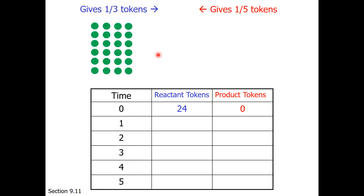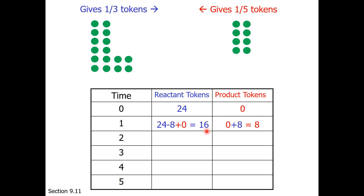We start with 24 reactant and no product tokens. Our first exchange: one third times 24 is 8 going forward, and one fifth times 0 is 0 going in reverse. After the first exchange, we are now at 16 reactant tokens and 8 product tokens.